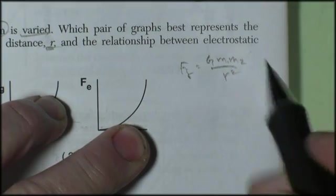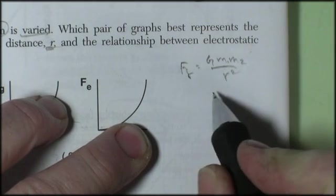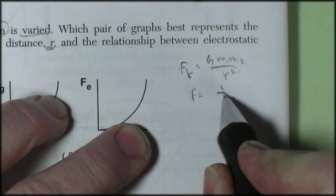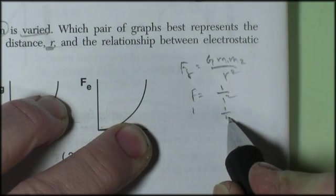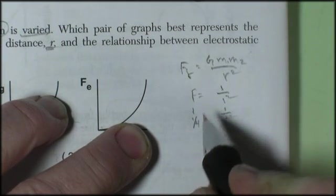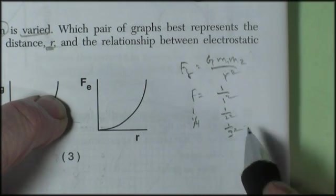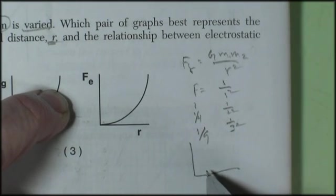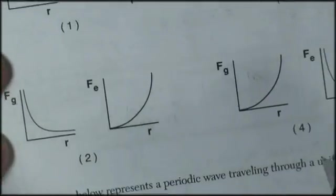Well, M1 and M2 and G are all going to be constants, so what happens to force as the distance increases. So force of gravity is equal to, I'm just going to make up numbers, 1 times 1 times 1 over 1 squared, force is 1. 1 over 2 squared, force is a fourth. Over 3 squared, it's a ninth. So as my distance gets bigger, my force decreases exponentially.